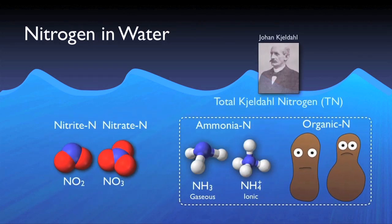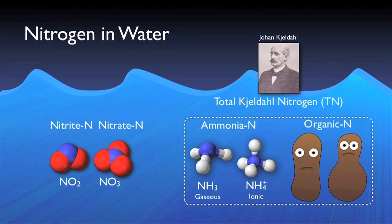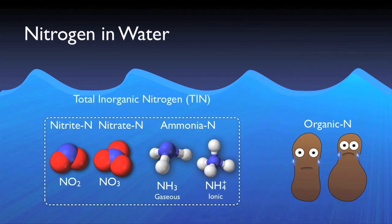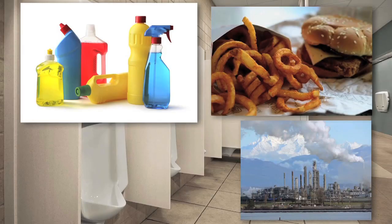TKN, or total Kjeldahl nitrogen, named after the scientist Johan Kjeldahl, is the sum of only organic nitrogen and ammonia nitrogen. TIN, or total inorganic nitrogen, is just as the name implies — the total nitrogen minus the organic nitrogen.